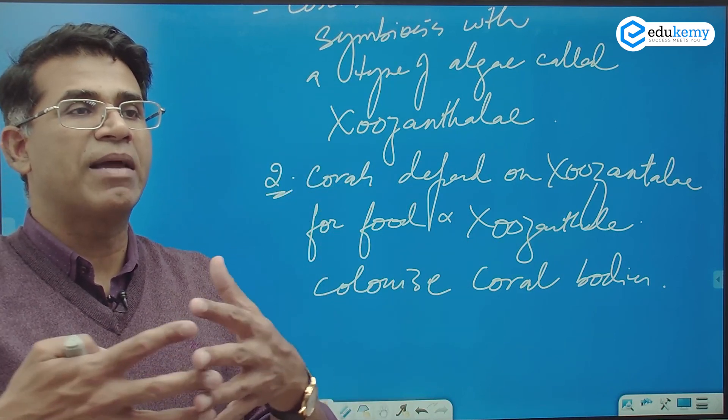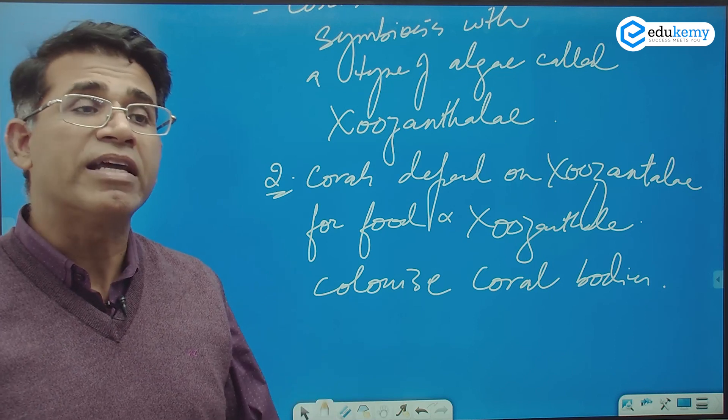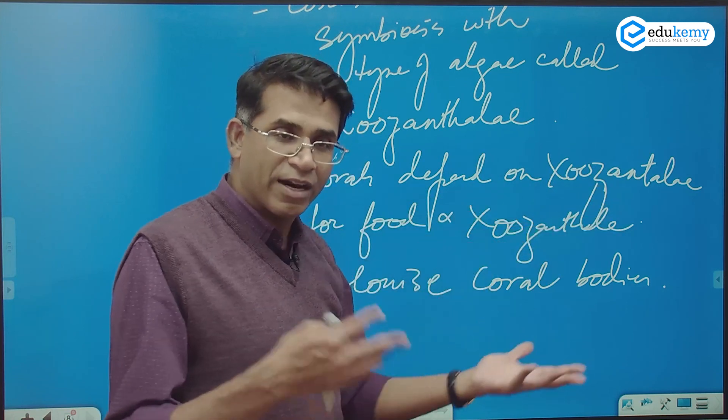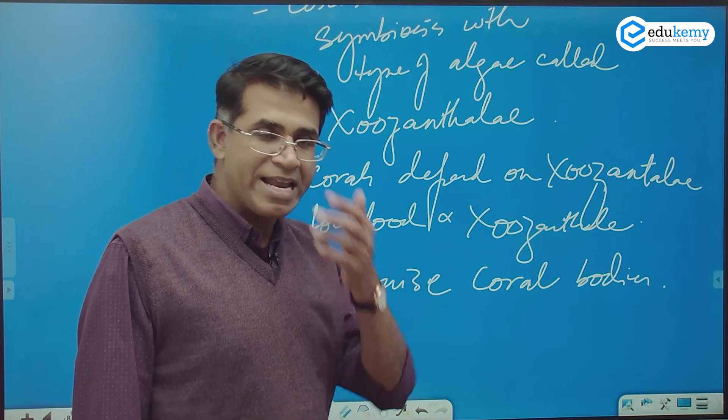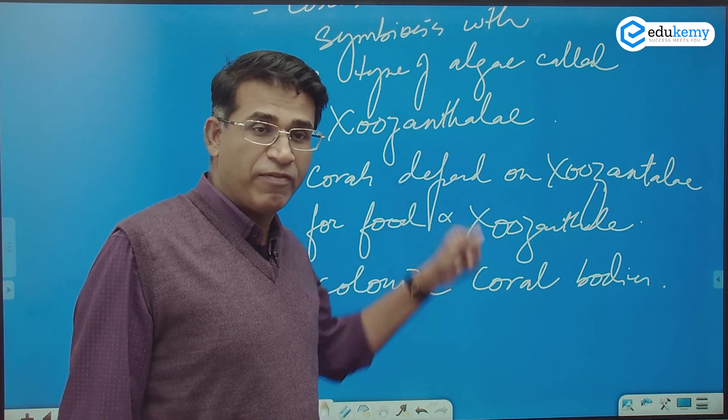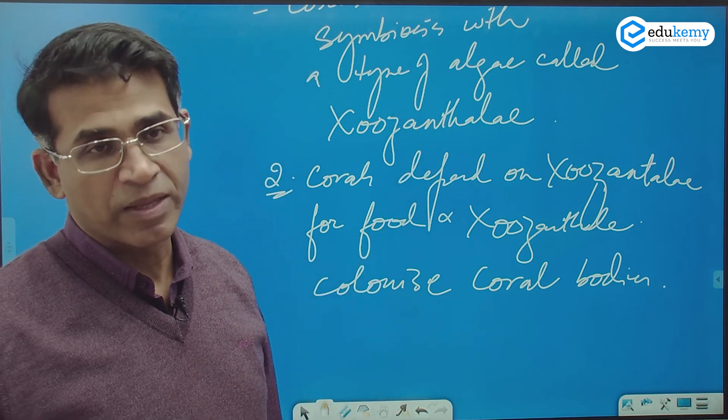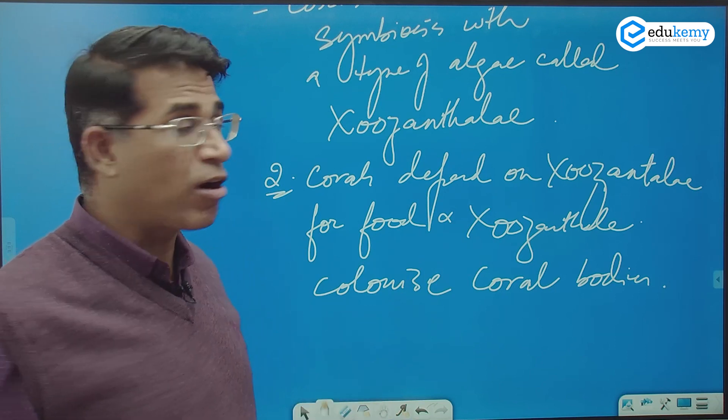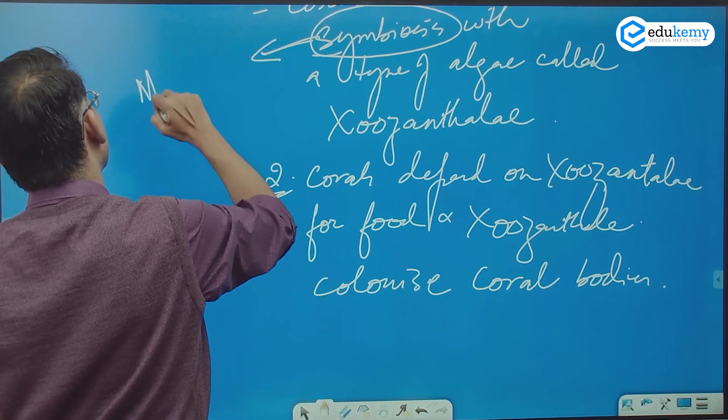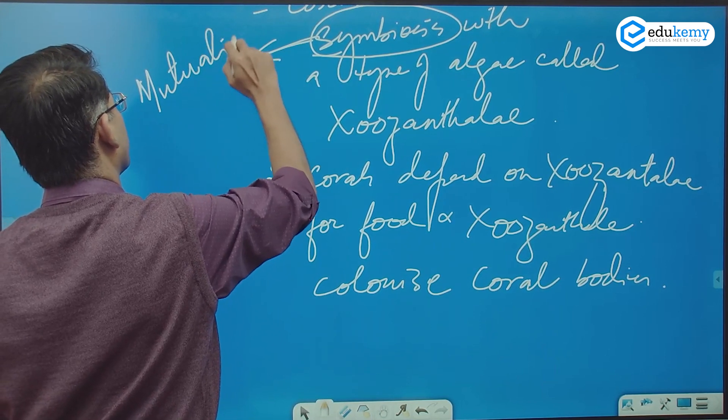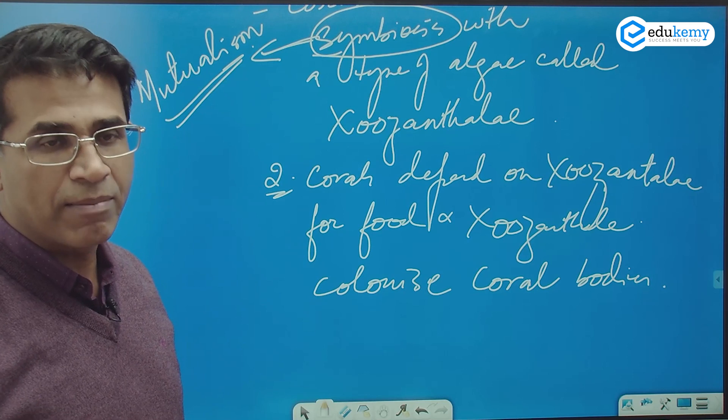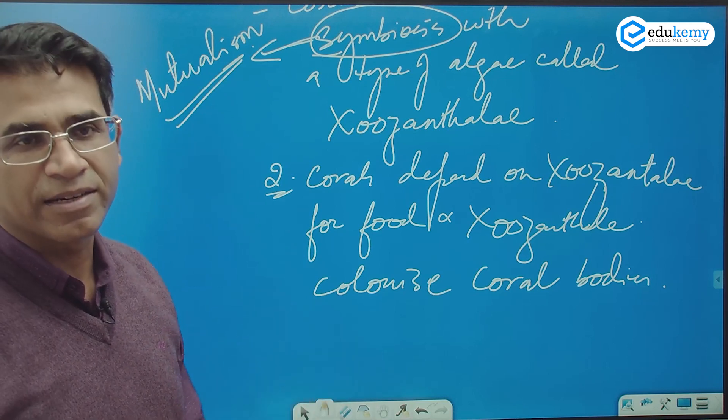So they have some type of symbiotic relationship. The corals need zooxanthellae because from them they get food. It's not parasitic. Parasitic is a one-way relationship. Both are being benefited. This is a symbiotic relationship, also called as mutualism.